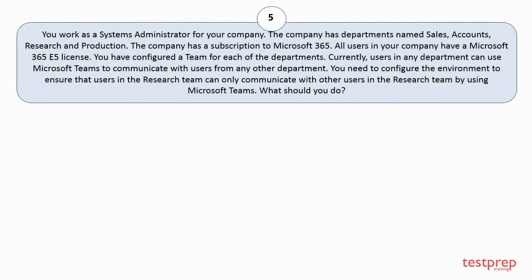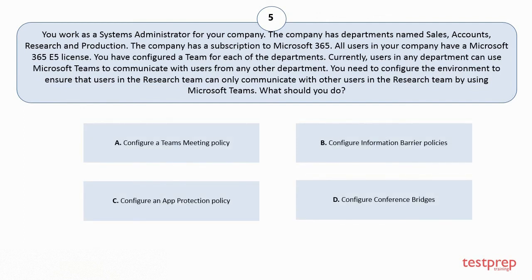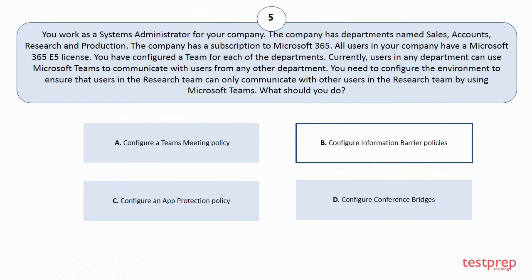Question 5. You work as a systems administrator for your company. The company has departments named Sales, Accounts, Research, and Production. The company has a subscription to Microsoft 365. All users in your company have a Microsoft 365 v5 license. You have configured a team for each of the departments. Currently, users in any department can use Microsoft Teams to communicate with users from any other department. You need to configure the environment to ensure that users in the research team can only communicate with other users in the research team by using Microsoft Teams. What should you do? Your options are: A. Configure a team's meeting policy. B. Configure information barrier policies. C. Configure an app protection policy. D. Configure conference bridges. The correct answer is Option B.